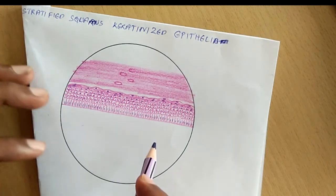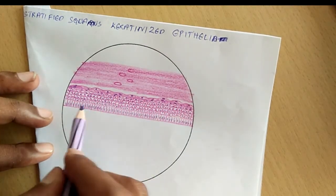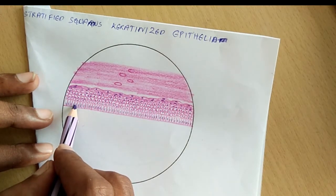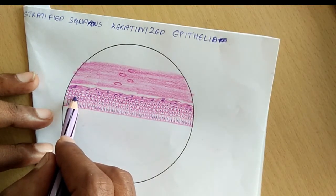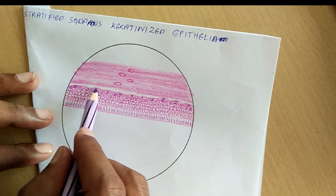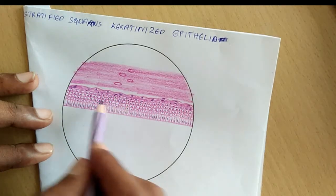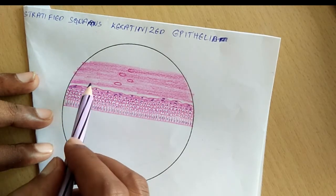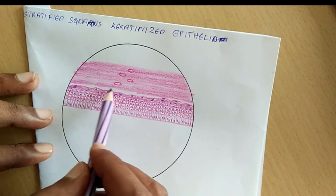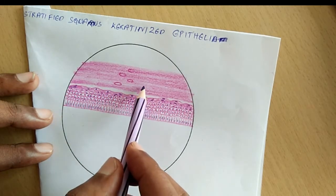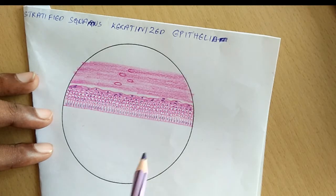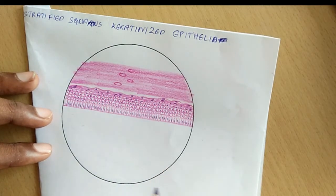Now let me tell you this layer. This is stratum basale, stratum spinosum, stratum granulosum, these flat cells. And stratum lucidum, you can see a space here, stratum lucidum, and the last one is stratum corneum. These are the five layers of skin, thick skin.